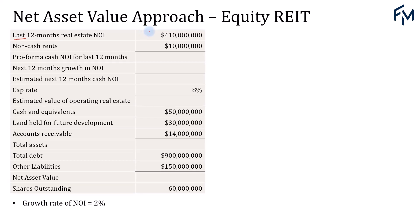We are going to calculate the pro-forma cash net operating income for the next 12 months — the NOI in year one, for the coming year. When you have non-cash rents, we have to remove it from the NOI, which gives us 400 million. The growth for the next 12 months in NOI is assumed to be 2%, so 2% times 400 million is 8 million. That gives us 408 million for the next 12 months as our estimation.